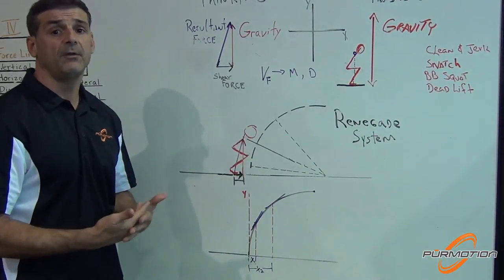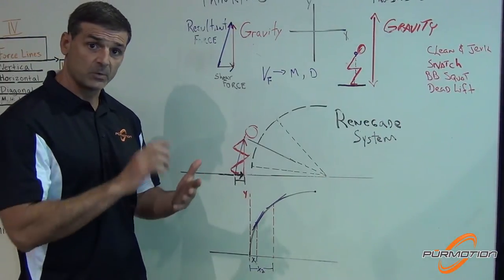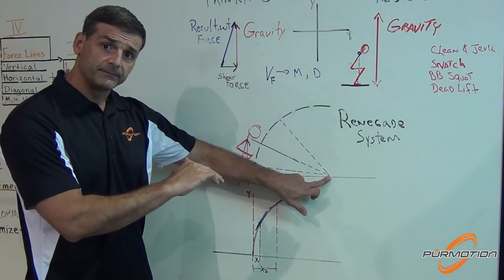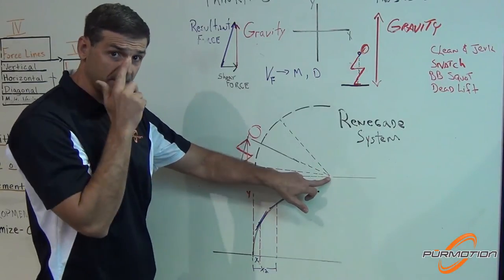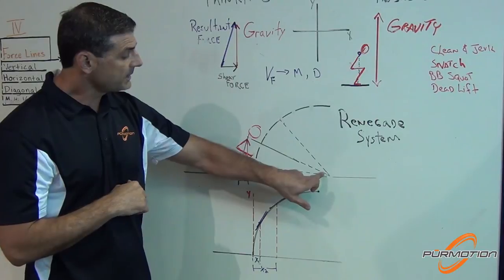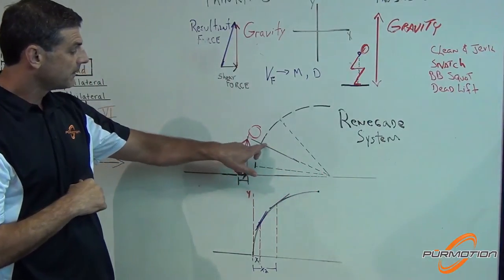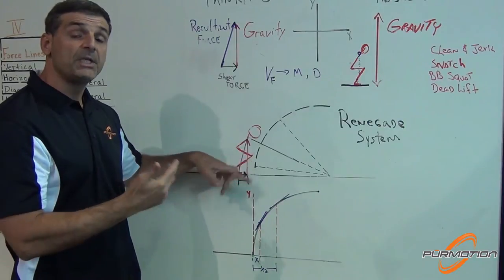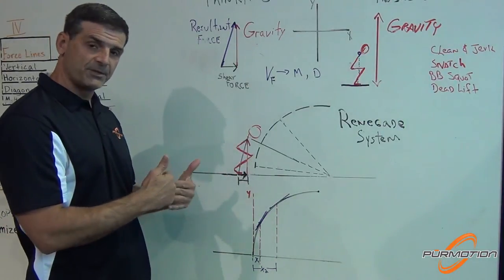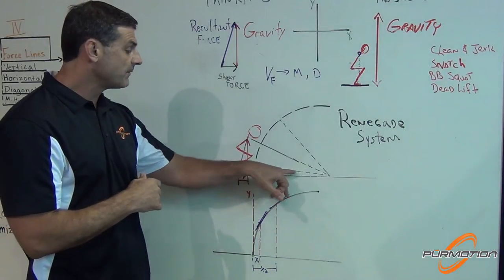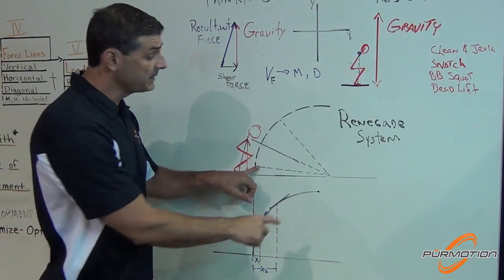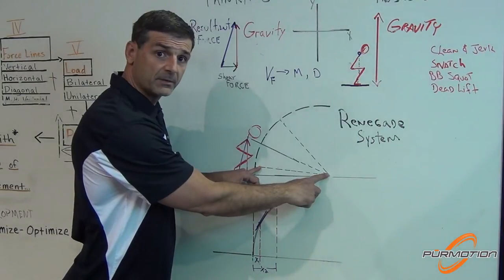The Renegade system is nothing else than our anchor point swivel device that goes at the bottom or at the other end of the Olympic bar. This line here represents actually the Olympic bar, which in geometry, if you go back to your geometry class, that would be the radius of a circle and the anchor swivel point, the Renegade, is the center of the circle.